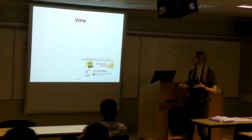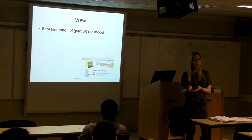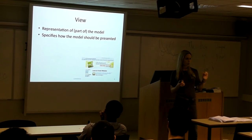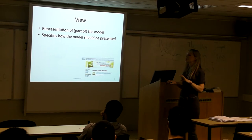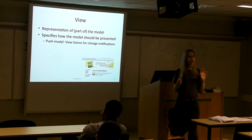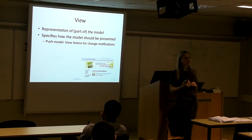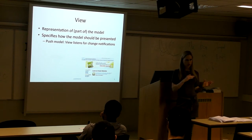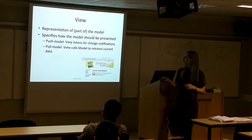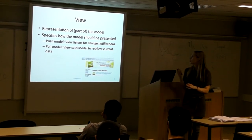The view is something that's relatively tangible. It's a representation - a visual representation usually, though of course it doesn't have to be - of part of the model. It specifies how the model should be presented. The view code looks at part of the model and specifies how it should be presented to the user. There are a couple of ways the data from the model can get to the view. In the push model, the view listens for change notifications from the model. Alternatively, in the pull model, the view can call the model to get its most recent state.